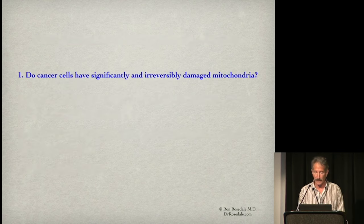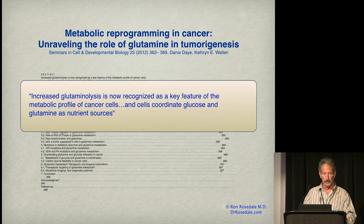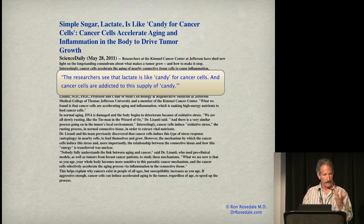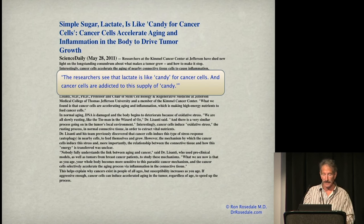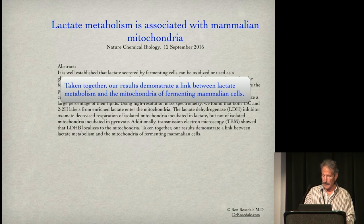Do cancer cells really have significantly and irreversibly damaged mitochondria? It's well known that glutamine is a well-known fuel for cancer — cancer gobbles up glutamine, and glutamine is metabolized in mitochondria. That makes you scratch your head: if mitochondria are so damaged, how can cancer use so much glutamine? Not just glutamine but lactate: glycolysis produces lots of lactate, but then the cancer eats that lactate. Researchers find lactate is like candy for cancer cells. Taken together, results demonstrate a link between lactate metabolism and the mitochondria of fermenting mammalian cells — in other words, lactate is utilized in mitochondria, so they can't be too damaged.